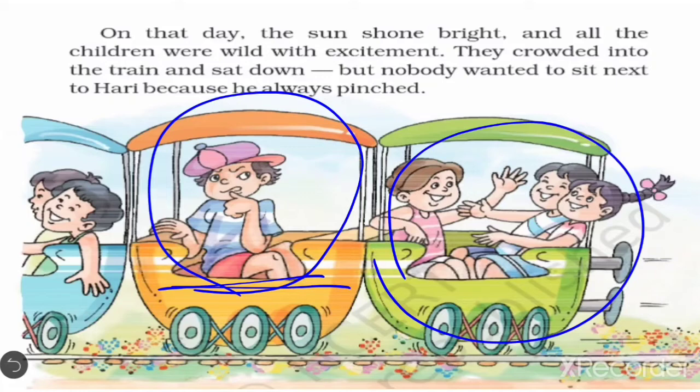So students, what we have to do? We have to become good — good boys and good girls. We have to talk politely with others, never hurt others, and like to help others. Harry loves to pinch and disturb, but what value should we develop? We love to help others — this is the value we have to develop.